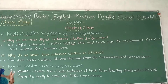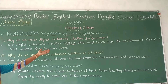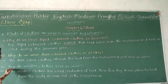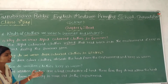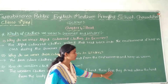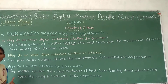The third question is: how do woolen clothes keep us warm? Woolen clothes are bad conductors of heat. Therefore, they do not allow the heat from the body to move out into the environment.